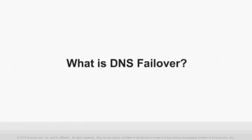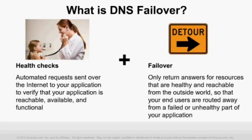What is DNS Failover? DNS Failover really consists of two components. The first is Health Checks — Route 53 checks your application on a constant basis to verify that each location where your application is running is healthy and reachable from the outside Internet. Then Failover takes the results of those health checks and intelligently only returns the IP addresses corresponding to healthy locations of your website, thereby rerouting users away from any location that is either failed or unreachable from the outside Internet.